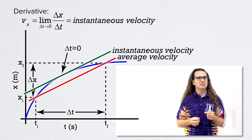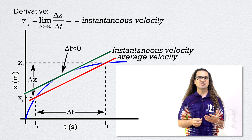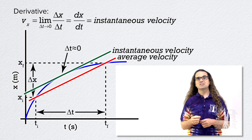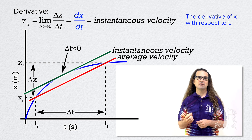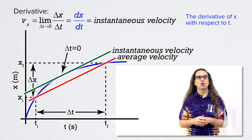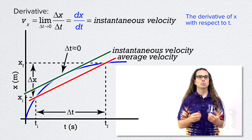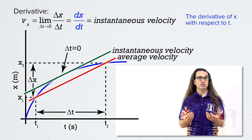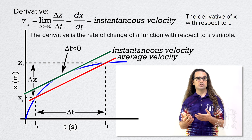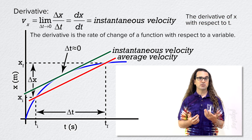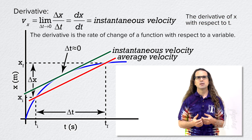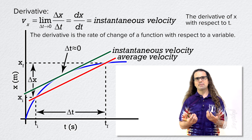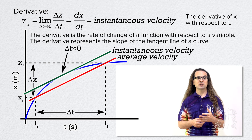The way we write the derivative for instantaneous velocity is dx over dt. What that means is the derivative of x with respect to t, or the derivative of x position with respect to time. The definition of the derivative is the rate of change of a function with respect to a variable. For our purposes, the derivative represents the slope of the tangent line of a curve.